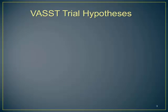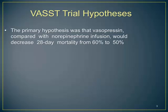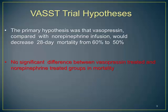I will start my talk by mentioning the VAS trial hypothesis. The VAS trial is arguably the major advocate for using vasopressin in septic shock, and I will be pointing out a couple of shortcomings that I've noticed in the study. The primary hypothesis of the VAS trial was that vasopressin compared to norepinephrine would decrease 28-day mortality from 60% to 50%. As we already know, it actually failed — there was no statistically significant difference between the two arms in mortality at 28 days or 90 days.